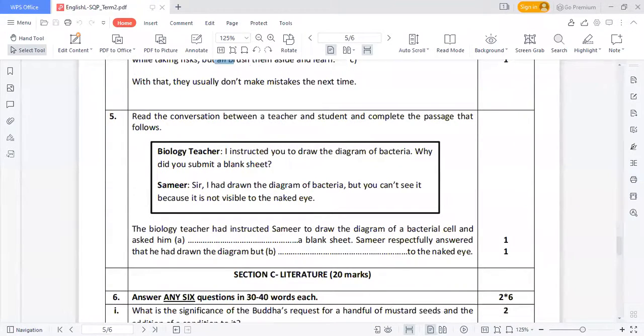Read the conversation between a teacher and student and complete the passage that follows. Biology teacher: 'I instructed you to draw the diagram of bacteria. Why did you submit a blank sheet?' Sameer says: 'Sir, I had drawn the diagram of bacteria but you can't see it because it is not visible to the naked eye.' See, this is what is expected from your class also. This is one classroom joke, you can say.